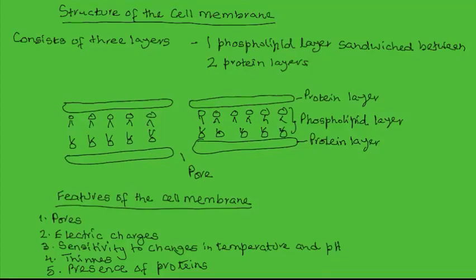The structure of the cell membrane consists of three layers. There is one phospholipid layer that is sandwiched between two protein layers. The phospholipid molecule consists of the fatty acid part and a phosphate molecule — these two components make up the phospholipid layer, and on either side of it there is the protein layer.